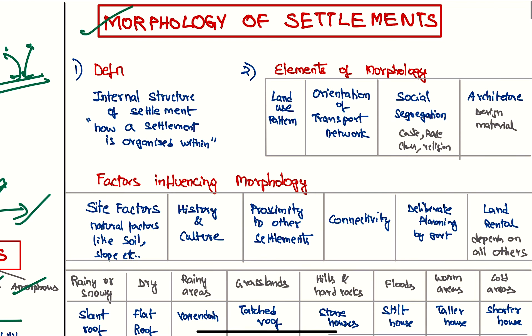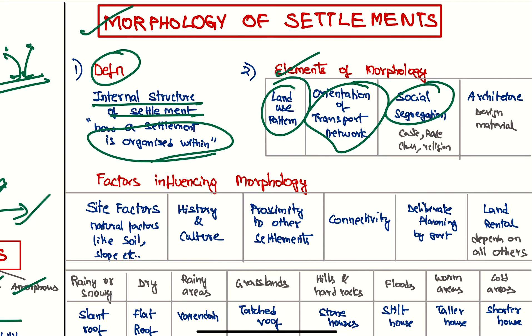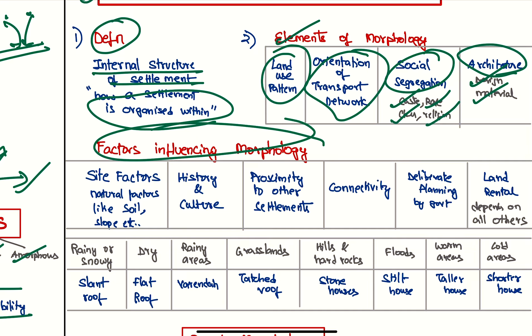Next we have morphology of settlements. What is morphology? It is the internal structure of a settlement—that is, how is a settlement organized within. The elements are: how is the land, what is the land use pattern, orientation of the transport network, social segregation on basis of caste, race, religion, and class, and architecture—what is the design used and what are the building materials. Factors influencing the morphology: we have site factors or natural factors like soil, slope, climate, etc.; history and culture; proximity to other settlements; connectivity; deliberate planning by government; and land rental is dependent on all these factors.